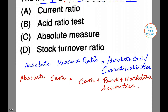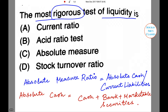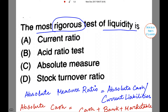So here option C, that is absolute measure, is the correct answer. The most rigorous test of liquidity is absolute measure, and this is our answer.